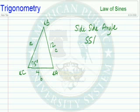We call this SSA in geometry. That means two sides and the angle that's not touching the two sides.